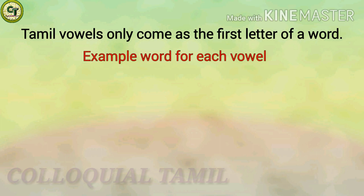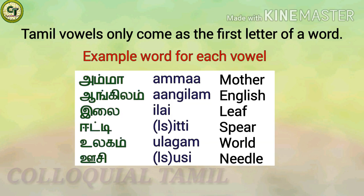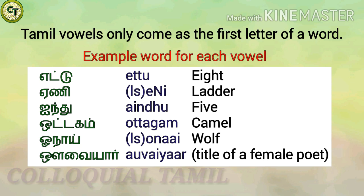Tamil vowels only come as the first letter of a word; they don't come in the middle or the end. Here are example words for each vowel: 'a' — amm, meaning mother; 'A' — Angulam, meaning English; 'i' — Eli, meaning leaf; 'E' — EeT, meaning peer; 'u' — Ulaham, meaning world; 'U' — UuC, meaning needle; 'a' — Et, meaning eight; 'A' — Any, meaning ladder; 'i' — Aindu, meaning five; 'o' — Ottaham, meaning camel; 'O' — Onai, meaning wolf; 'au' — Avvaya, the title of a famous Tamil poet in Tamil literature.